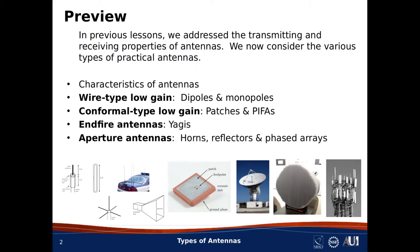For antenna types, what I'll discuss falls into four broad categories. First, the wire-type low-gain antennas, which include dipoles and monopoles. Next, the conformal-type low-gain antennas, which include patch antennas and PIFAs. Third, the Yagi antenna, as a representative of the class known as end-fire antennas. The fourth group is aperture antennas, which includes horns, reflectors, and phased arrays.